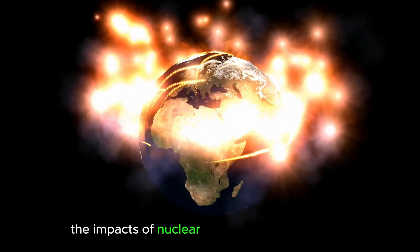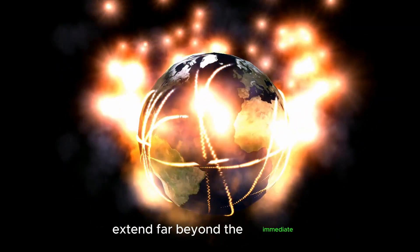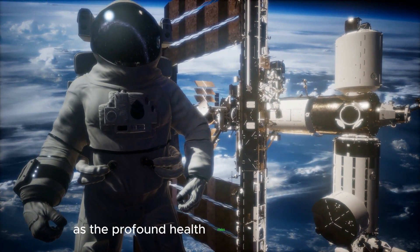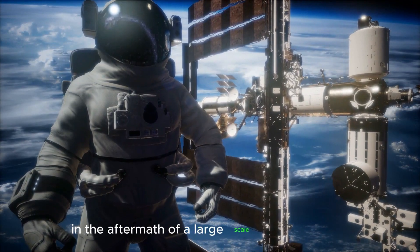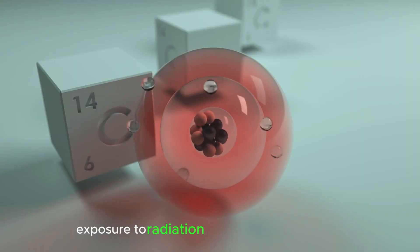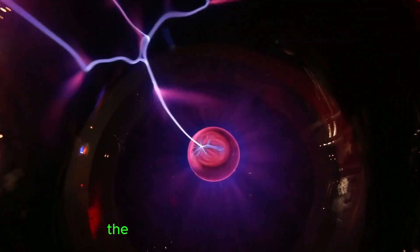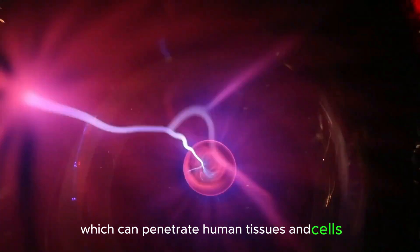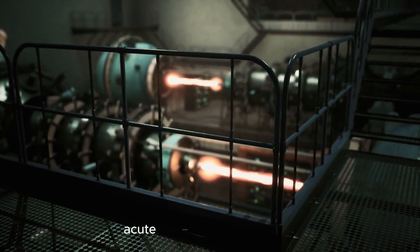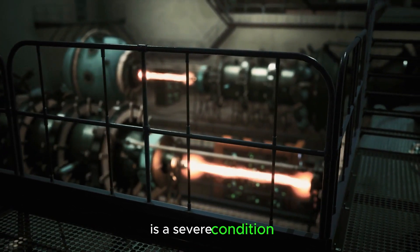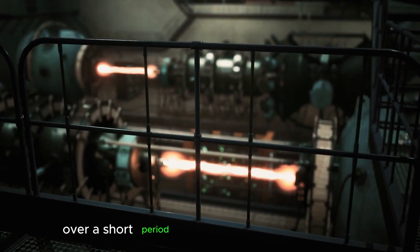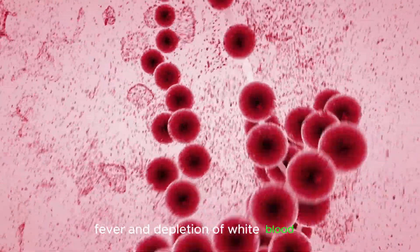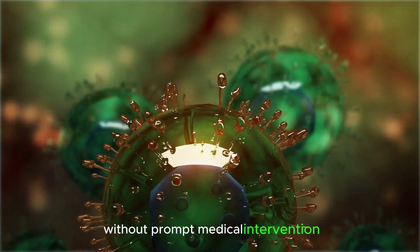The impacts of nuclear winter on human survival extend far beyond the immediate environmental and societal consequences. One of the most pressing concerns is the profound health risks posed to survivors in the aftermath of a large-scale nuclear conflict. Exposure to radiation from nuclear explosions represents a primary health risk. The detonation of nuclear weapons releases ionizing radiation, which can penetrate human tissues and cells, causing damage at the molecular level. Acute radiation syndrome, ARS, is a severe condition that results from high levels of radiation exposure over a short period. Symptoms may include nausea, vomiting, diarrhea, fever, and depletion of white blood cells. Without prompt medical intervention, ARS can be fatal.